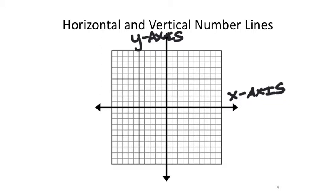You get almost a northeast-southwest kind of thing, but instead of saying south or west, we refer to those as negatives in this case. So the x and y-axis.